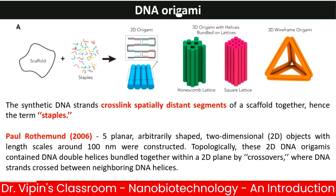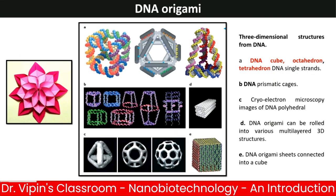DNA origami was discovered by Paul Rothemund in 2006. He made five planar arbitrarily shaped two-dimensional structures with length scales of around 100 nanometers. These 2D DNA origamis contain DNA double helices bundled together within a 2D plane by crossovers where DNA strands cross between neighboring helices. You can also make 3D structures, and even a box encoded by DNA sheets that can hold a protein of interest, protecting it until the box opens.